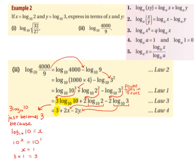Next, we bring down each of the powers following Law 3: log base a of x to the power q gives us q log base a of x. So the 3 comes down in front of the first log, the 2 comes down in front of the second log, and the 2 comes down in front of the third log. This gives us 3 log base 10 of 10, plus 2 log base 10 of 2, minus 2 log base 10 of 3.